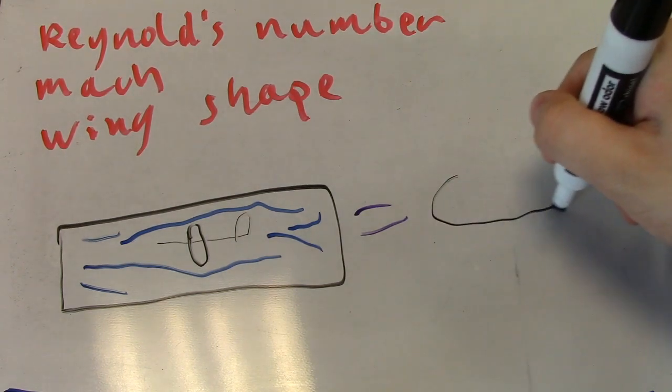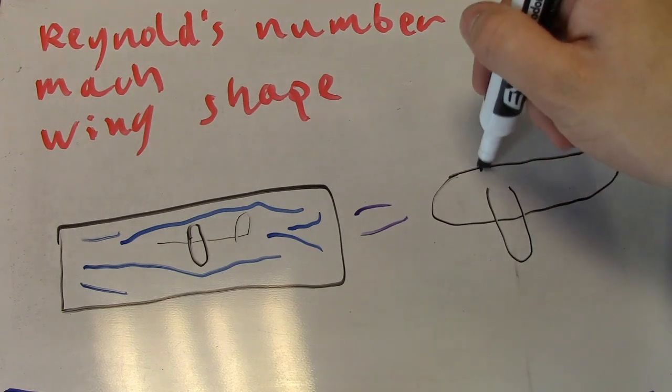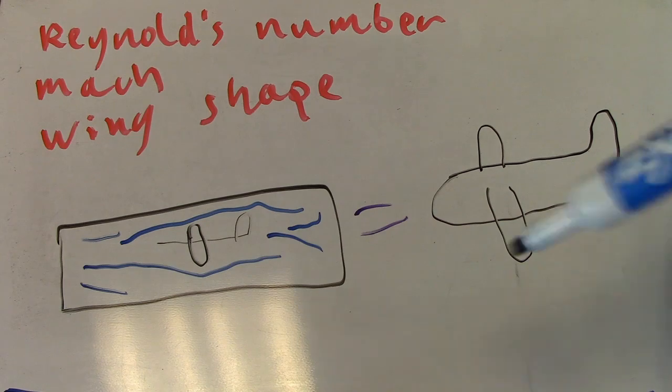As to what Reynolds number actually is, in a general sense, it describes how air flows around an object moving through that air.